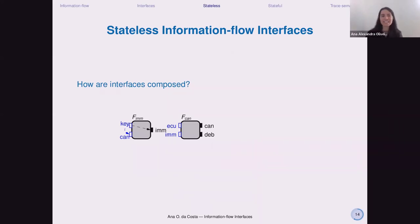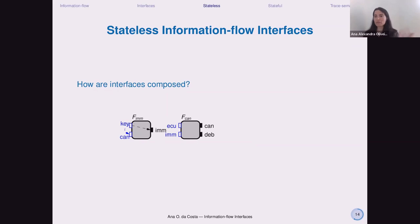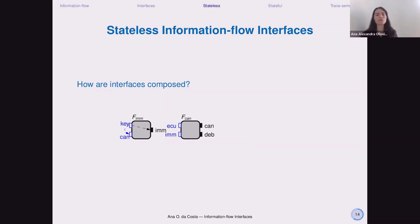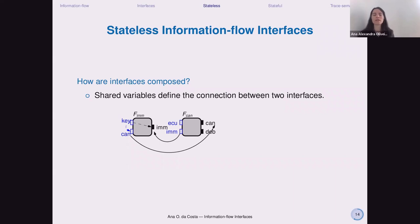How do we compose interfaces? We use the notion of shared variables. In this case, 'im' for immobilizer is an output port in interface F_im and an input port of interface F_can. When we compose these interfaces, we use the shared variable 'im' to do the composition. That's how we connect these two interfaces, and the shared variables become output variables of the composed interface.